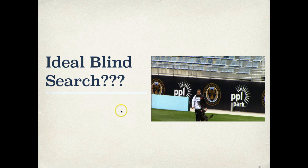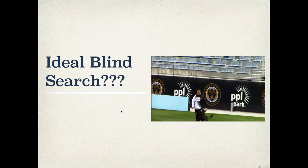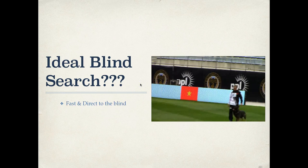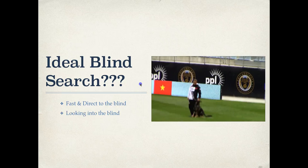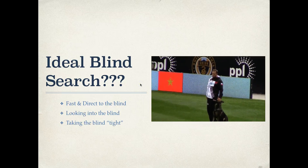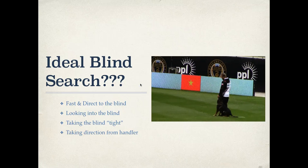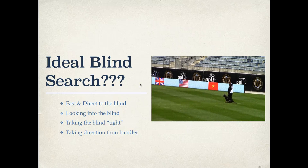So what does a good Blind Search look like? The model for what I'm trying to teach is Martin Peja and his dog Kato. This is video from the 2013 WUSV trial we'll take a look at. We want a dog that's fast and direct to the blind, that looks into the blind, takes the blind tight, and takes direction from the handler.